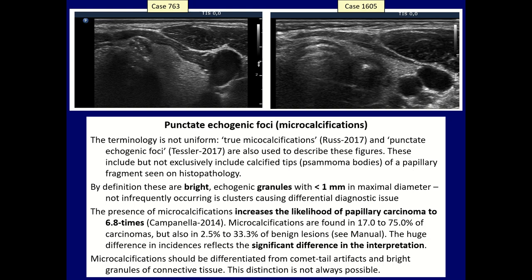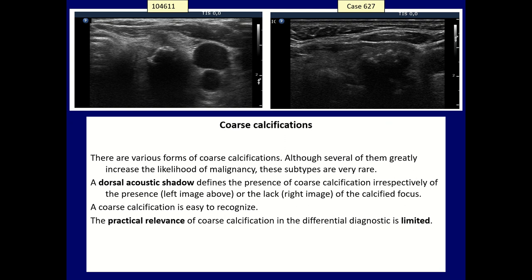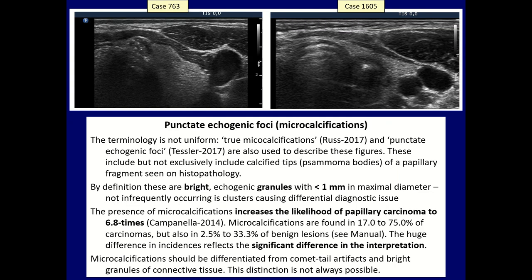For example, dense structures where cellularity is extremely high — such as the tip of a hyperplastic benign papilla — can also project as microcalcifications. These are bright echogenic granules not larger than one millimeter in maximum diameter. The presence of microcalcifications clearly increases the likelihood of papillary cancer to almost seven times.